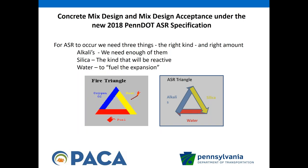Three things are needed for ASR: alkali, silica, and water. It's very analogous to the fire triangle — you need oxygen, heat, and fuel to have a fire. Take one away and there's no fire; that's why smothering a fire with a blanket removes the oxygen and puts it out. Same thing with ASR: we need all three. We need the alkalies, we need the silica, and we need enough water. Remove one of those and there's no ASR.